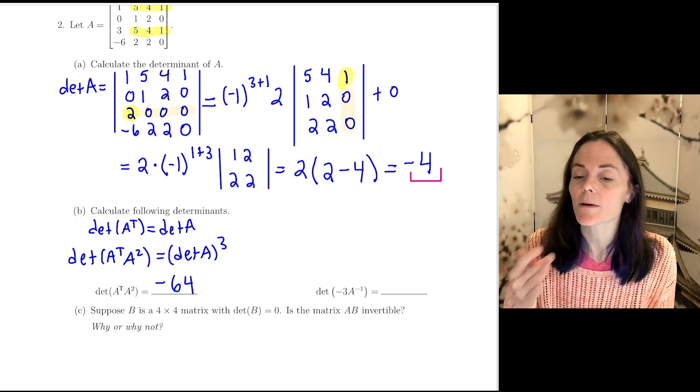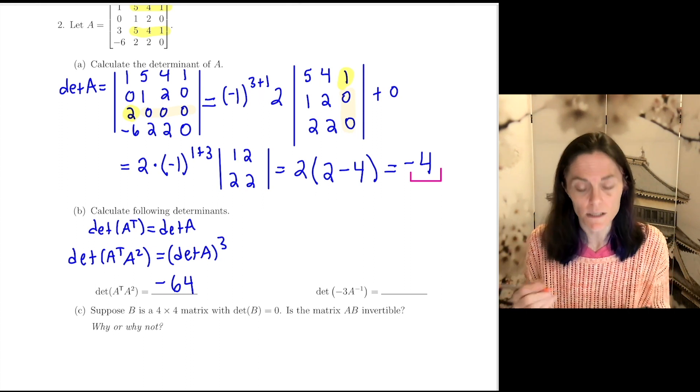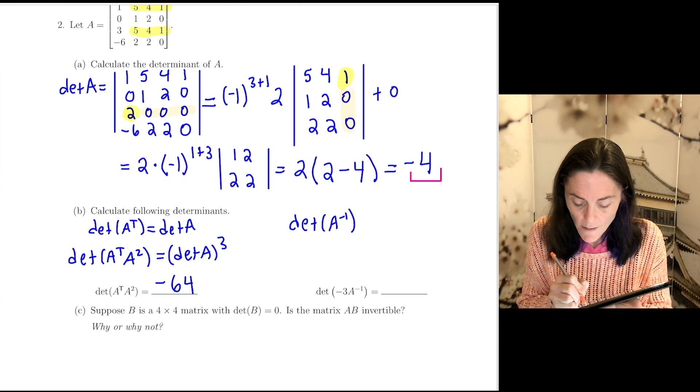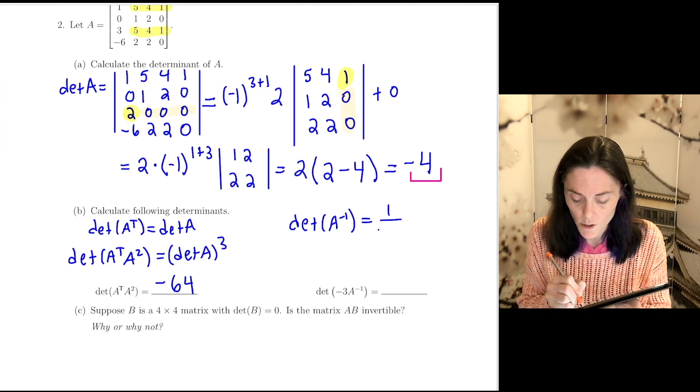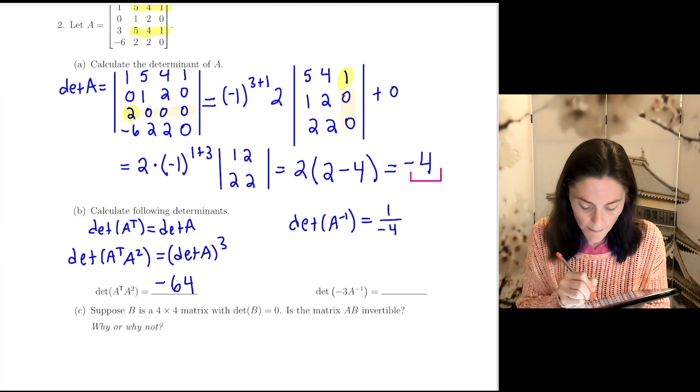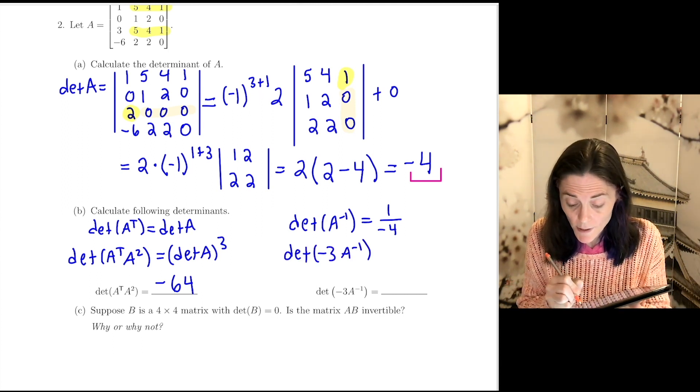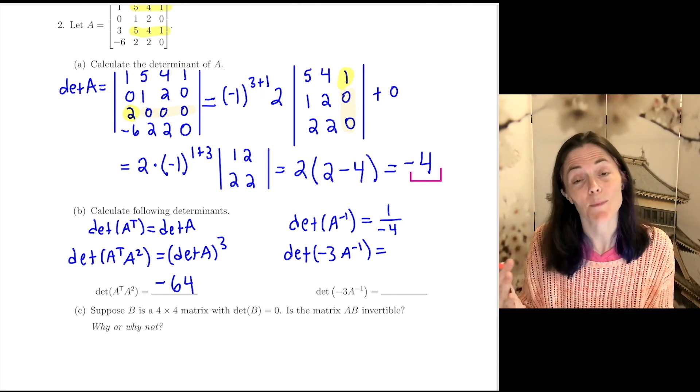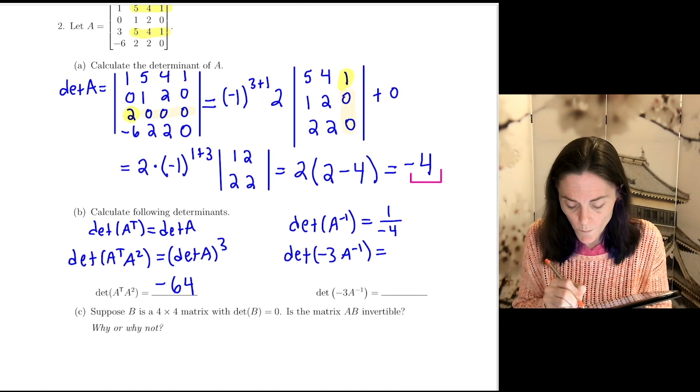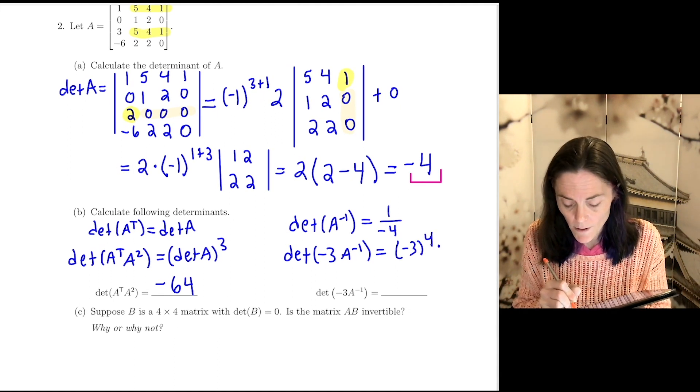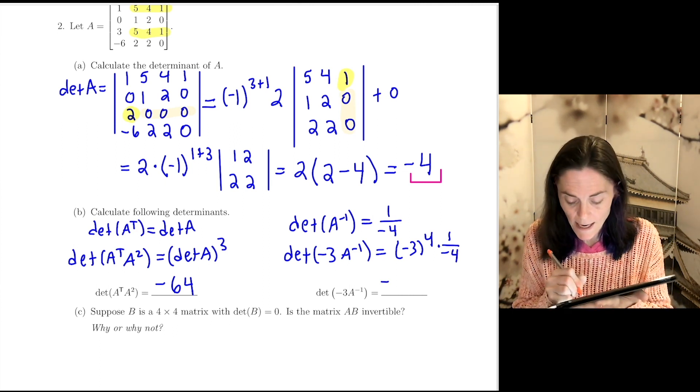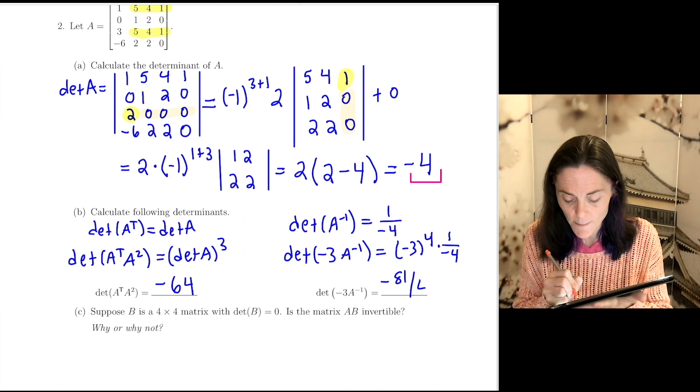Next one. We want the determinant of minus 3 times A inverse. One thing we know, let's first write the determinant of A inverse. This will be 1 over the determinant of A. But then, when I multiply minus 3, we have to remember that the determinant is linear in each row separately. It's called multilinear. I have 4 rows. So, this will be minus 3 to the 4th power times 1 over negative 4. And 3 to the 4th is 81. So, I get minus 81 divided by 4.